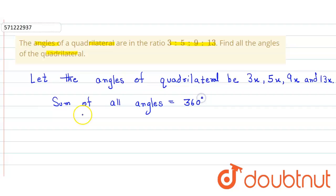So here we just simply put the values. The angles are 3x + 5x + 9x + 13x = 360°.